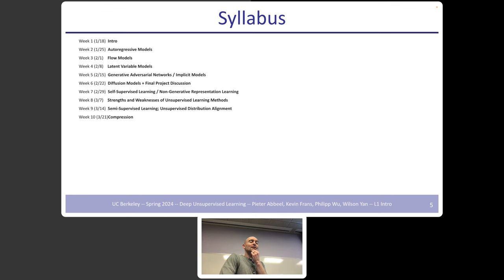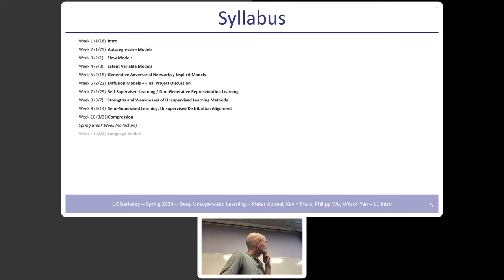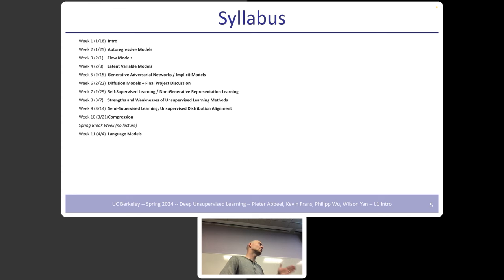We'll cover compression, which is not typically a machine learning topic, but everything in unsupervised learning ties back to it. The core hypothesis is that you're modeling data — finding patterns and representing it in a more compact way. In machine learning we also want it to be semantically meaningful, which is a slight extra twist. Spring break week there's no lecture. Then we'll do a dedicated language models lecture — language models are largely autoregressive, so things will come back from earlier but we'll dive much deeper.